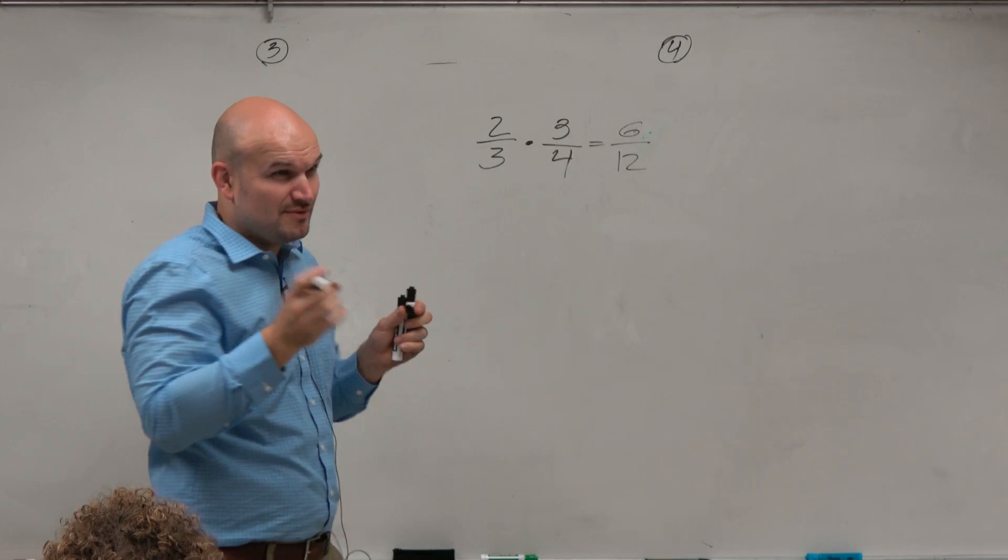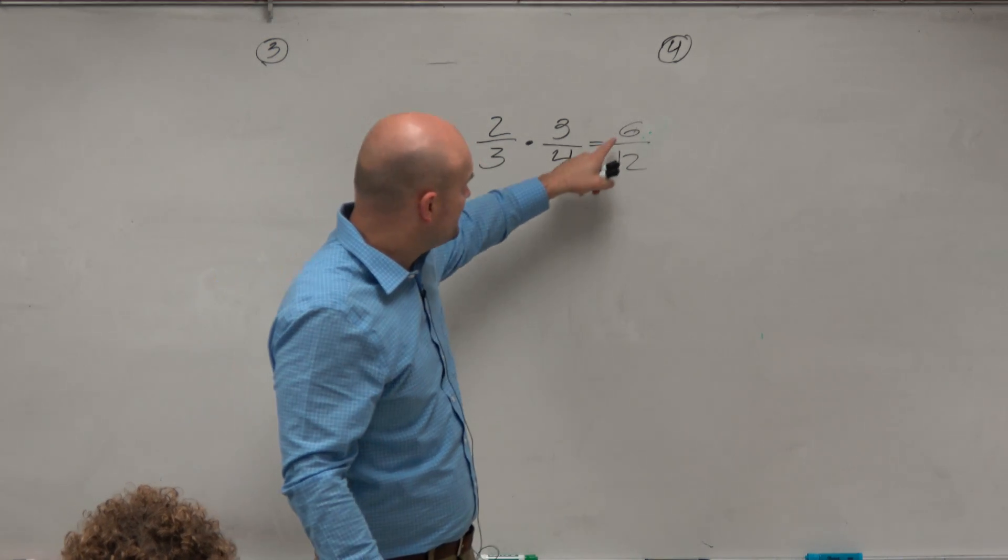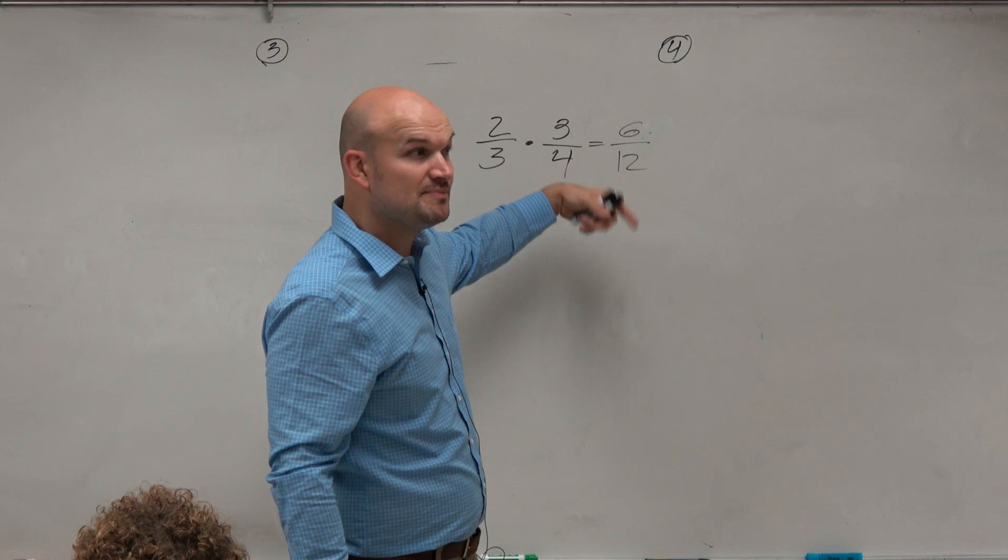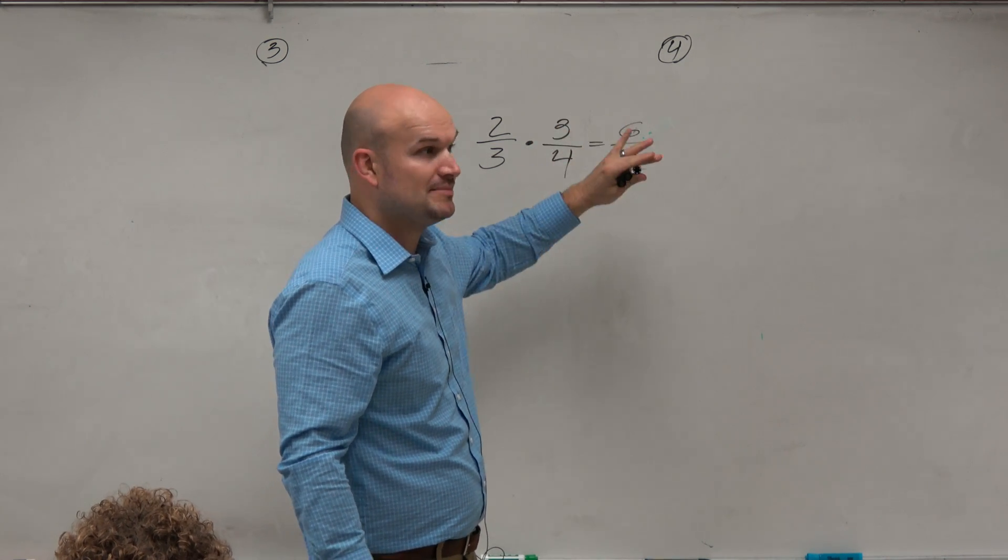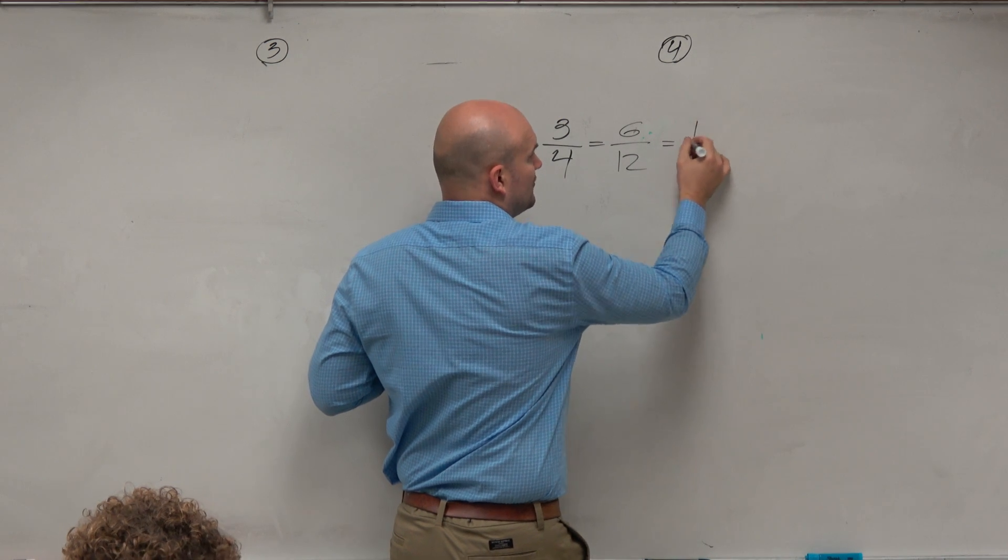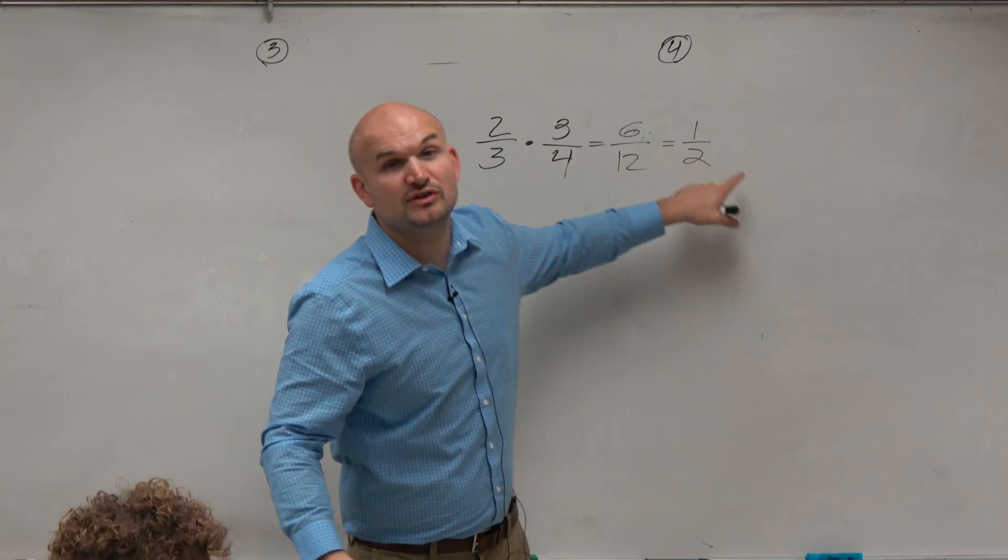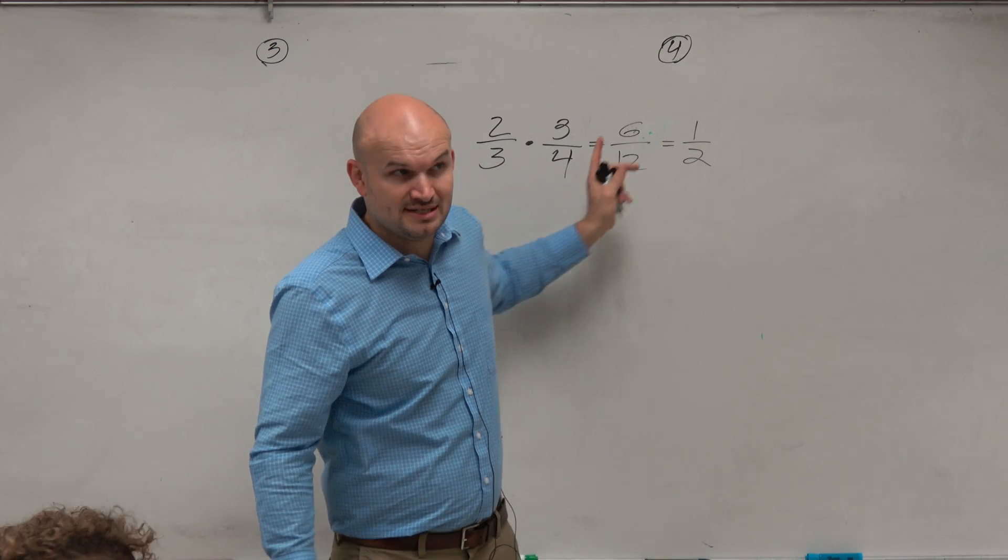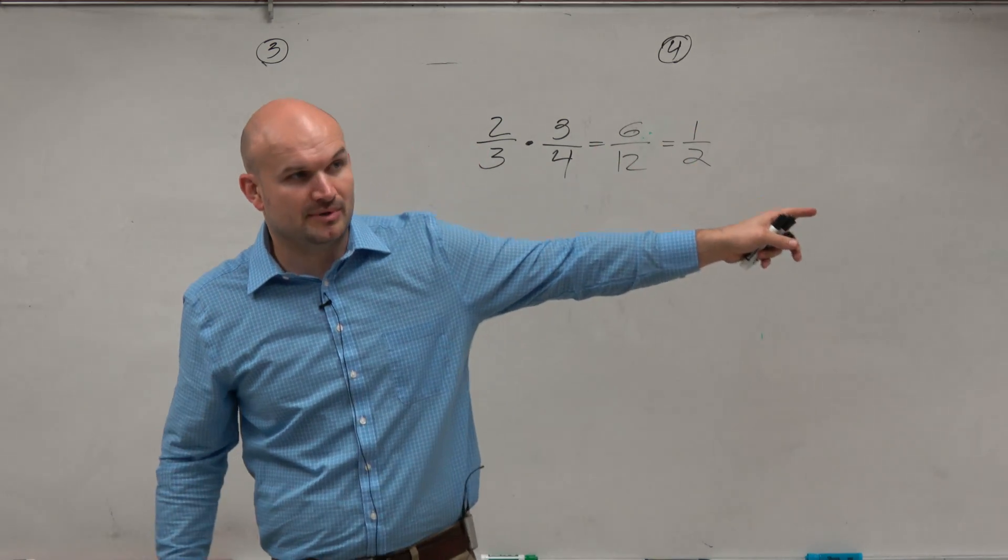And then also, remember an important thing to understand here is that we can obviously simplify our fractions by dividing the numerator and denominator by the same number, in this case 6, to get a reduced fraction of 1 half. And these are what we call equivalent fractions, which will become very important in another example that I'm going to be having.